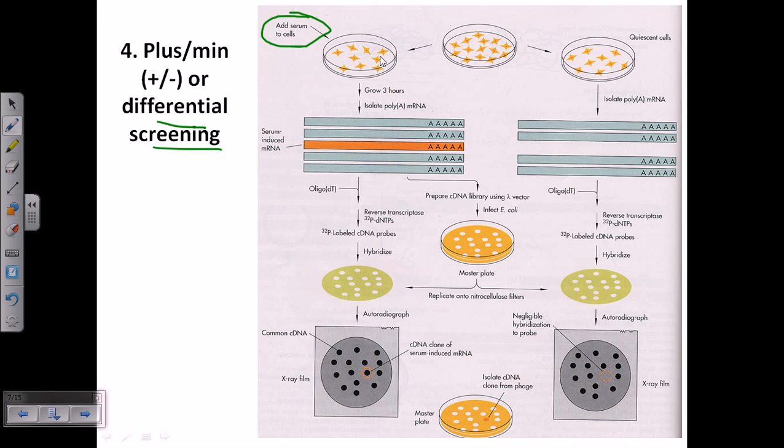Serum will trigger the development and growth of this kind of cell. So what we get if we extract all the mRNAs from this cell, we get this kind of mRNA which is induced by the presence of serum. Rest of the mRNAs are from different cells which are generally transcribed all the time, but this orange color one is something which is transcribed due to the exposure to the serum.